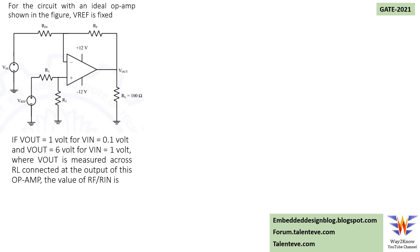Here is a question from analog circuits asked in a previous GATE exam. We have an ideal op-amp where V_reference is fixed at the non-inverting terminal. When Vin equals 0.1 volt, the output is 1 volt, and when Vin is 1 volt, the output is 6 volts. Vout is measured across RL. What is asked is the ratio between RF and RN — the feedback resistor and the input resistor.